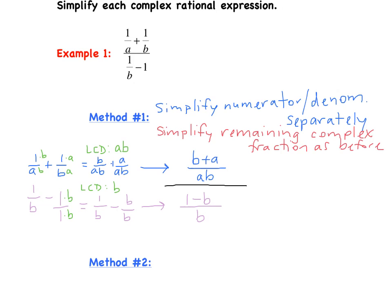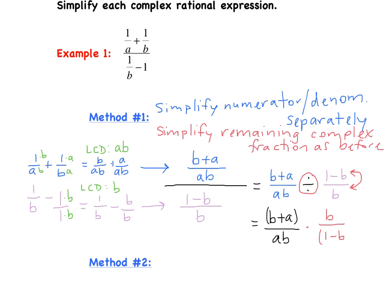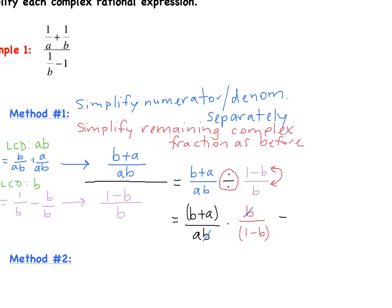So now we can rewrite it as our numerator (B plus A) over AB divided by our denominator (1 minus B) over B. We change it to multiplying by the reciprocal. We have (B plus A) over (A times B) times B over (1 minus B). Going through and canceling the B's, we are left with (B plus A) over A times (1 minus B). That's method 1.